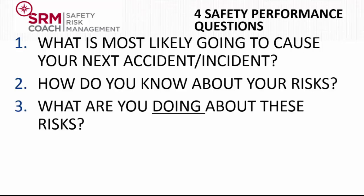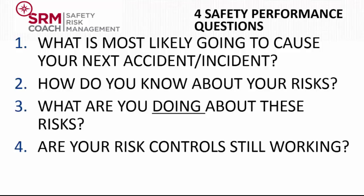The third question is: what are you doing about these risks? Just knowing what the highest risks are is not going to make your organization safe. We have to take action to reduce these risks through investing time, money, and effort in risk controls that bring risk to an acceptable level. The fourth question is about assuring that your organization is safe: are your risk controls still working? The organization might have invested in risk controls in the past, but over time their effectiveness might degrade. Think about the red descending curve in the safety space. If people stop paying much attention to following rules and procedures, our likelihood of having an accident might increase.